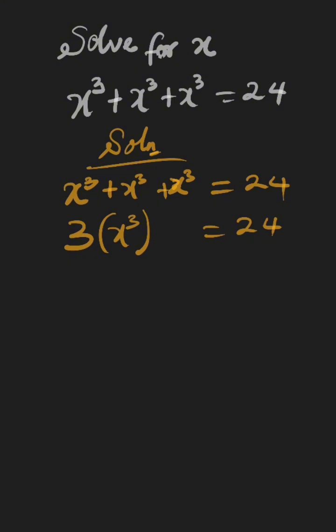Next step, we divide both sides by 3. We have 3x raised to the power of 3 all over 3 equals 24 all over 3.